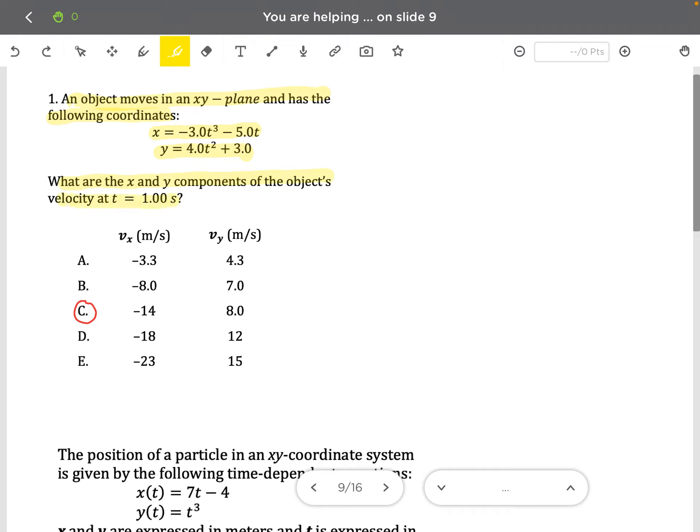of the object's velocity at time is equal to one second? So once again, these two are actually position in the x and y axis, and we are interested to obtain the velocity of the object at time is equal to one second.